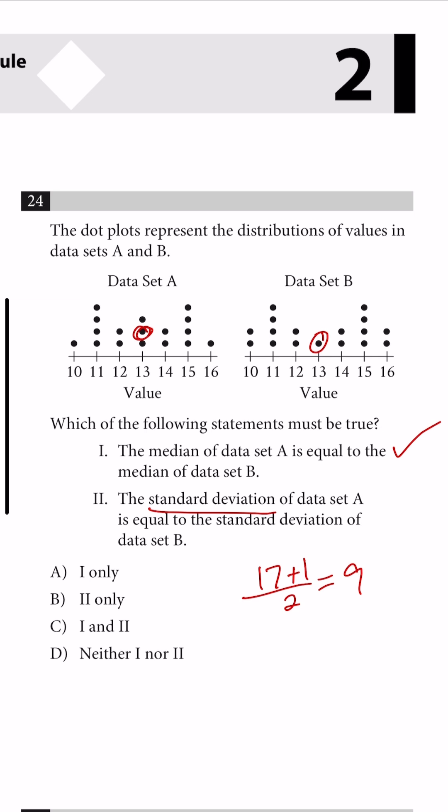We can see that the only difference between data set A and data set B is that data set A has an extra point in the middle, 13, and data set B has extra points on the outer edges. So 10 and 16 average to 13. So they have the same mean.